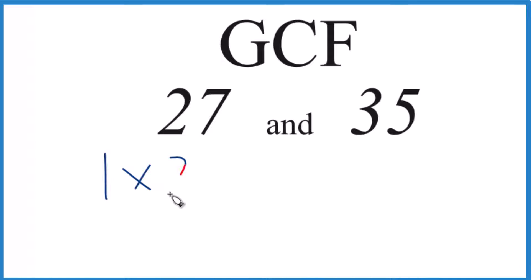For 27, 1 times 27, that equals 27 and 3 times 9. Those are the factors.